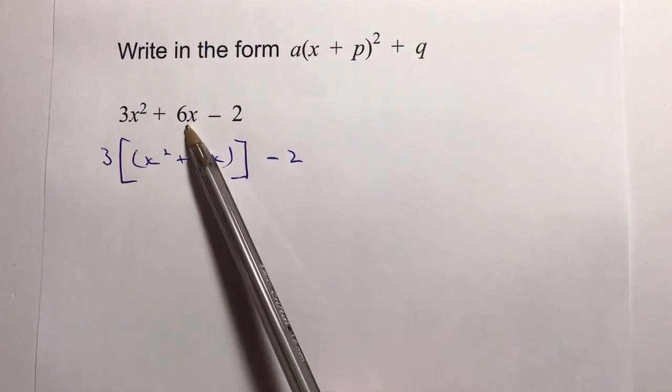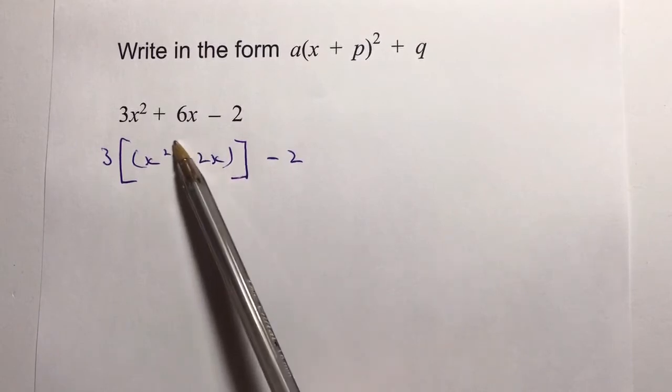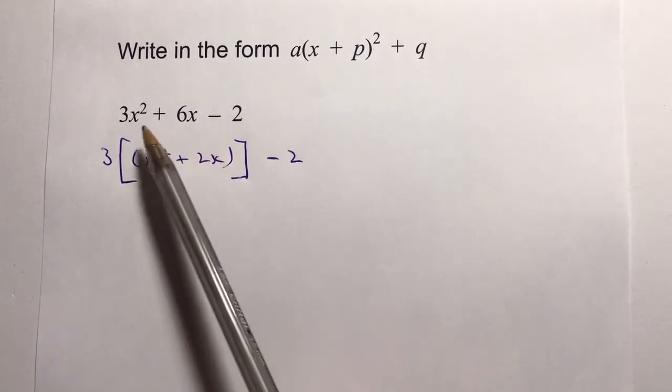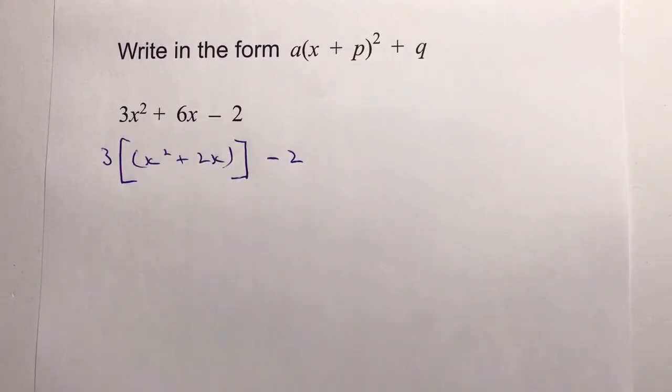So this is just the factorization of these first two terms, and then I've put the minus 2 at the end there just so I don't forget that it's actually there.